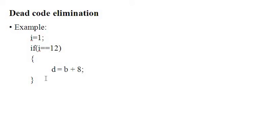So these are the code optimization techniques — there are six different code optimization techniques: compile time evaluation, common sub-expression elimination, variable propagation, code movement, strength reduction and dead code elimination.